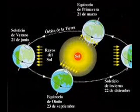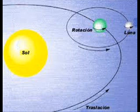Solstices and Equinoxes. The translation is the movement by which the Earth describes one complete revolution around the Sun, a complete orbit. The time it takes the Earth to carry out a complete translation is what we call a year, approximately 365 days and 6 hours.